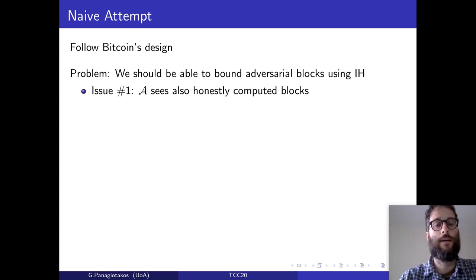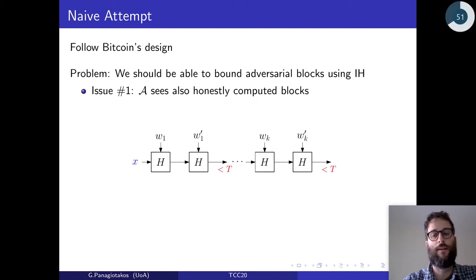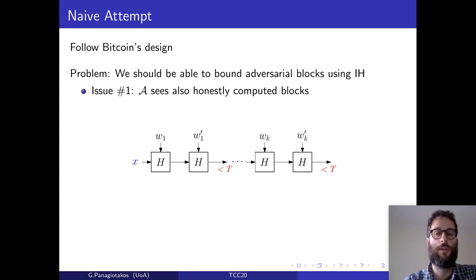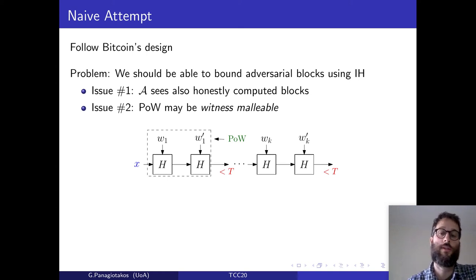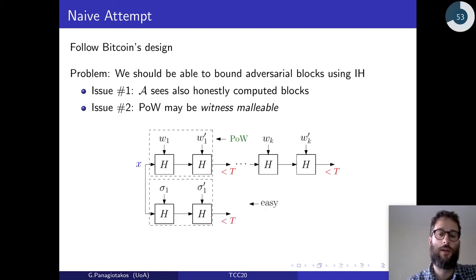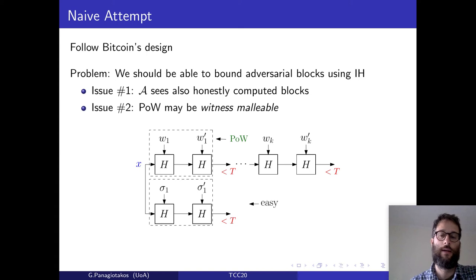The first issue is that the adversary in the Bitcoin execution also sees honestly computed blocks. If you remember the iterated hardness game, there the adversary does not get any help from any external oracle giving him small hashes. This kind of implies that in our solution we should be able to cheaply generate and simulate honest blocks. The second issue is that iterated hardness does not exclude the possibility that the proof of work of Bitcoin is witness malleable. While iterated hardness ensures that it's hard to generate a sequence of blocks, it does not say anything about generating blocks at the same level. In the random oracle model, we can prove that it's hard to generate small witnesses at the same level.